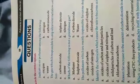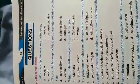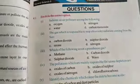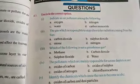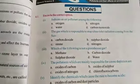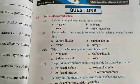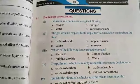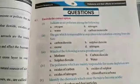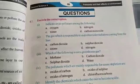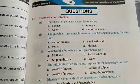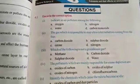MCQ number two: the gas which is responsible to stop ultraviolet radiation coming from the sun. Option A: carbon dioxide. Option B: sulphur dioxide. Option C: ozone. Option D: nitrogen. The correct option is C, ozone.